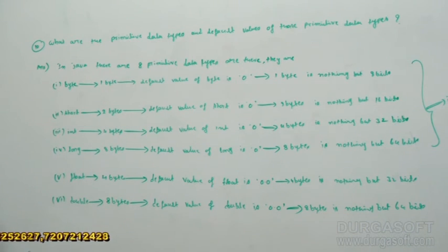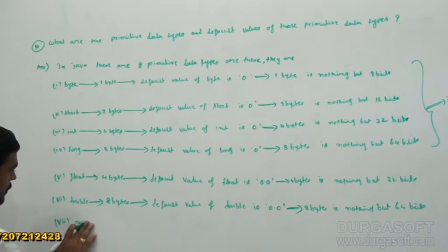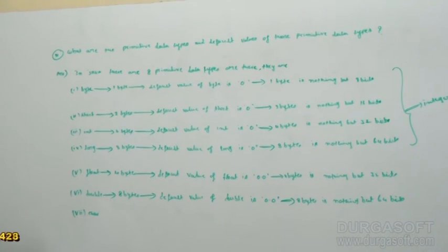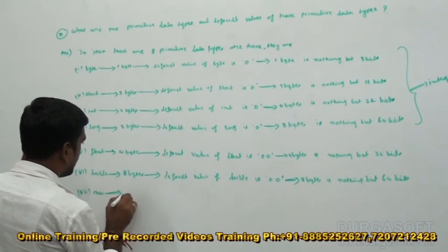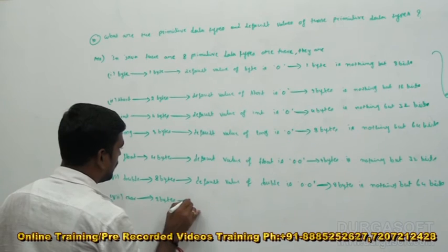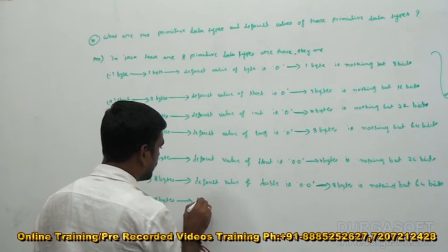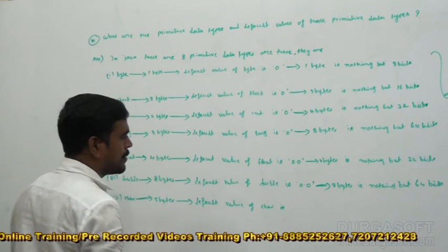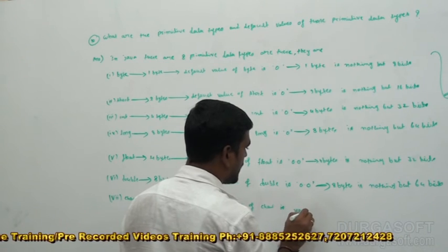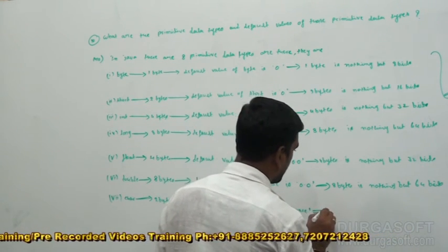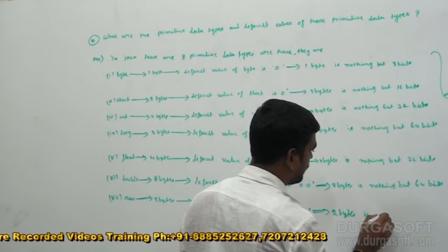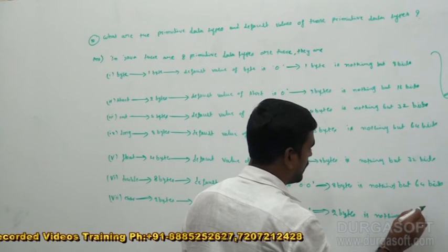The seventh data type is char. Char is a data type that is going to be occupied by two bytes of information. The default value of char is space, and 2 bytes is nothing but 16 bits.